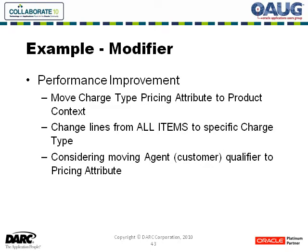What we did here is an example of using the product context. Rather than create a new pricing attribute associated to the line, it made more sense from a maintenance standpoint to move charge type to a product context. We used the same function that mapped the attribute when it was a non-product attribute, and changed all the modifiers from all items to use a specific charge type. We've also been considering moving customer down as a pricing attribute on the line — much the same way we moved state on the price list — to further refine the engine.